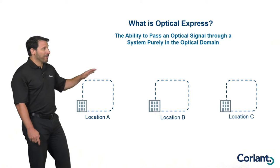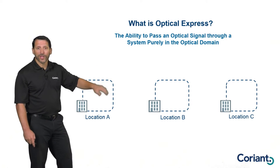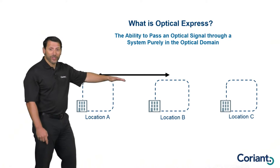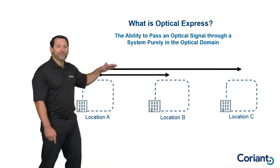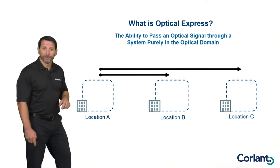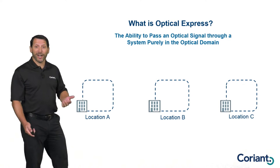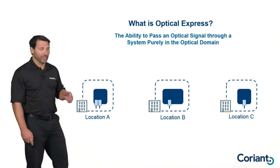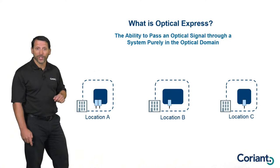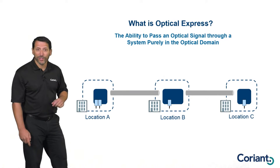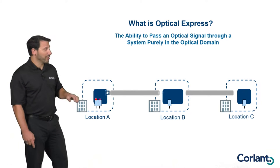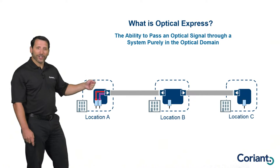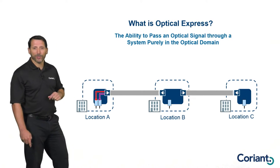If we take a look at a simple example, I've got three locations, A, B, and C. What I want to do is take information from location A and transmit some of it to location B and some of that information all the way to location C. To start with, I'm going to need an optical line system and interface modules to generate those signals and transmit them across the network.